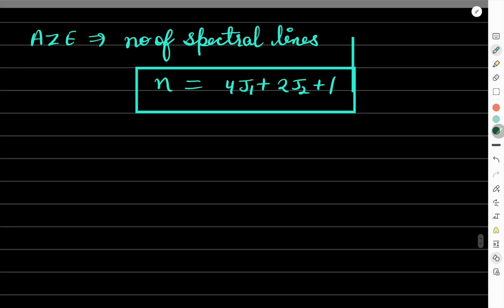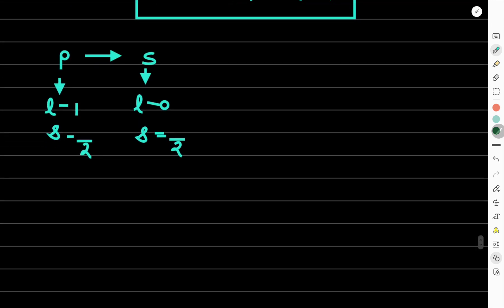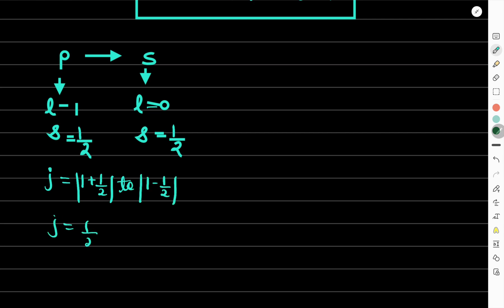For the P to S state transition, we check the j values. For the P state, L = 1 and S = 1/2, giving j values of L + 1/2 = 3/2 and L − 1/2 = 1/2. For the S state, L = 0 and S = 1/2, giving only j = 1/2.